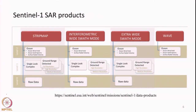The same is applicable to Sentinel-1 SAR. Data can be obtained in different modes: strip map mode, interferometric wide swath, extra wide swath. These differ based on whether we want large swath coverage instead of fine spatial resolution, or fine spatial resolution but a narrow swath. Depending on our needs we can choose the data and program the satellite to acquire it.